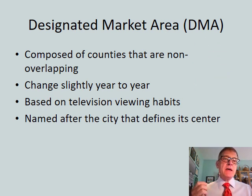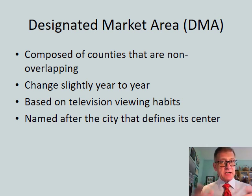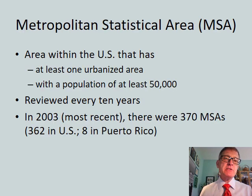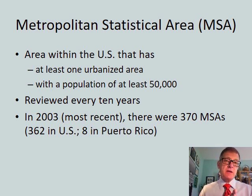A designated market area consists of counties that are non-overlapping — for example, three counties in the tri-state region of the New York metropolitan area. These are often based on television viewing habits and named after the defining city. The metropolitan statistical area is an area within the U.S. with at least one urbanized area of at least 50,000 people. That's reviewed every decade or so. As of the book's most recent data from 2003, there were over 370 of them, eight of which were in Puerto Rico.